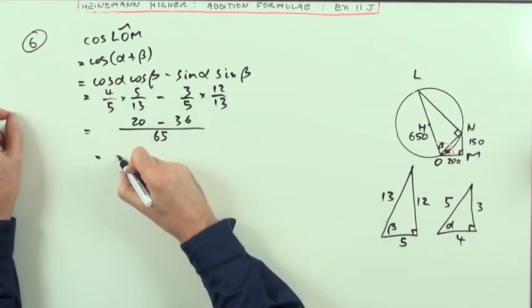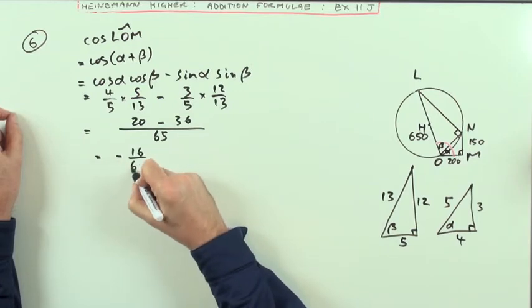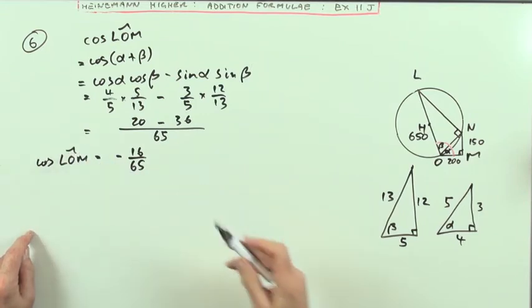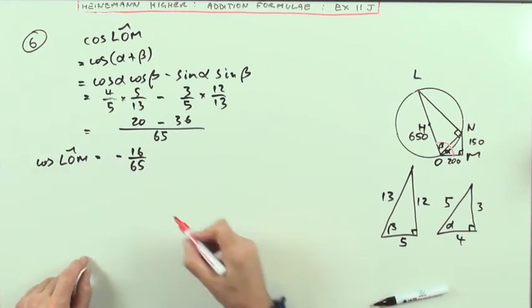So it's turned out negative, so I've got negative 16 upon 65. The cosine of LOM is negative 16 upon 65.